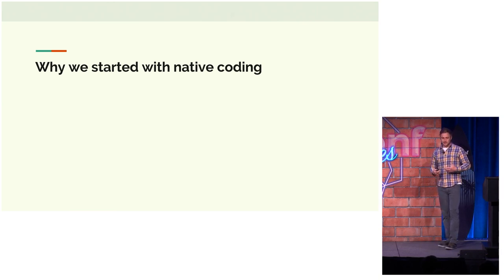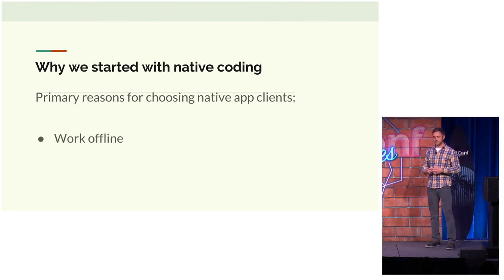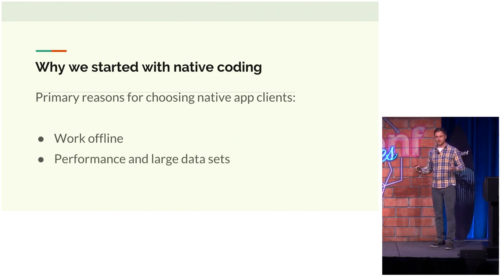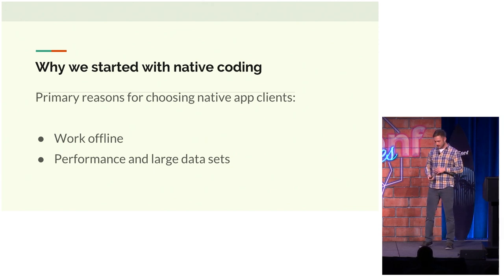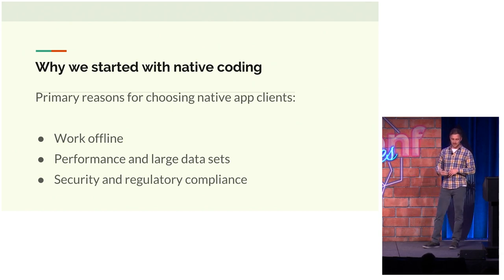Why did we start with native coding? We started with native coding because we needed our applications to work offline. This is a big deal for our customers — they're down in vaults, in manholes, all kinds of situations with no network, and this was a must-have. Because they're working offline and dealing with enterprise data, they have millions of records. They need to search hundreds of thousands of parts that need to be cached offline. And then we have to deal with security and regulatory compliance, which we felt we could handle best with native.